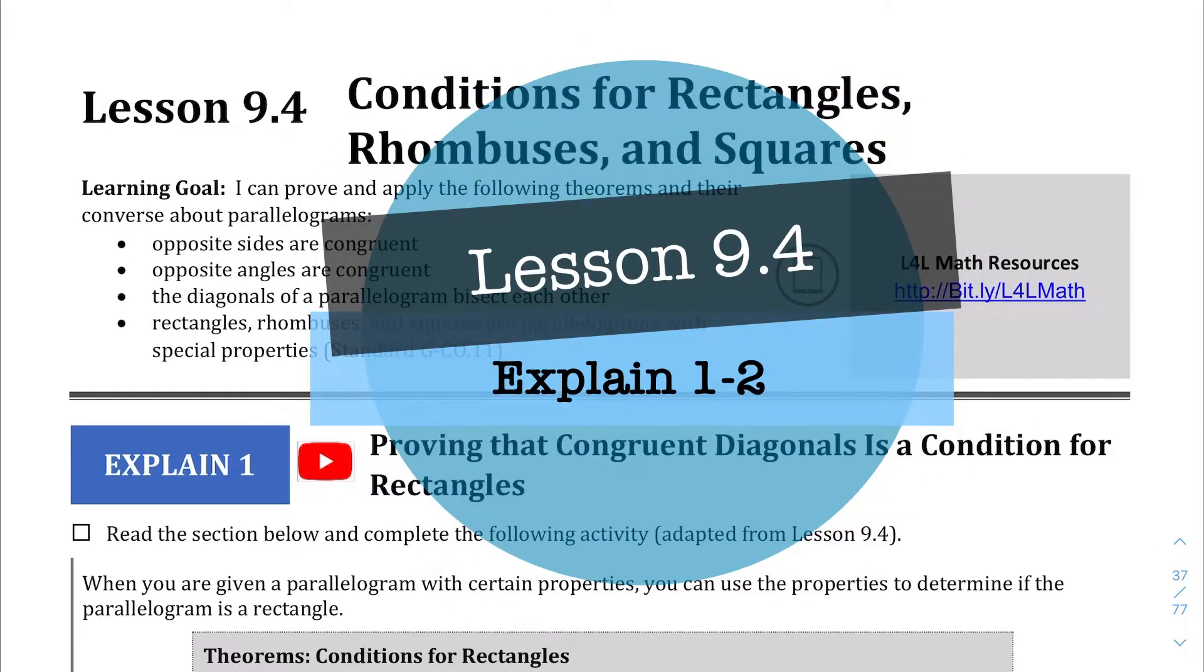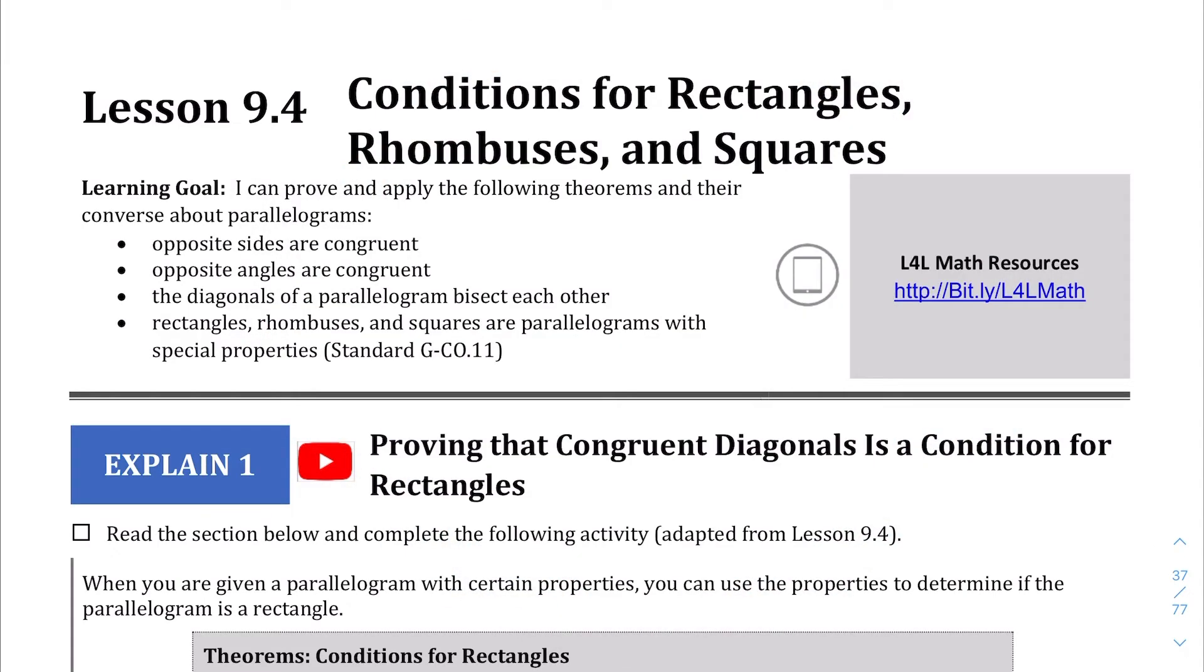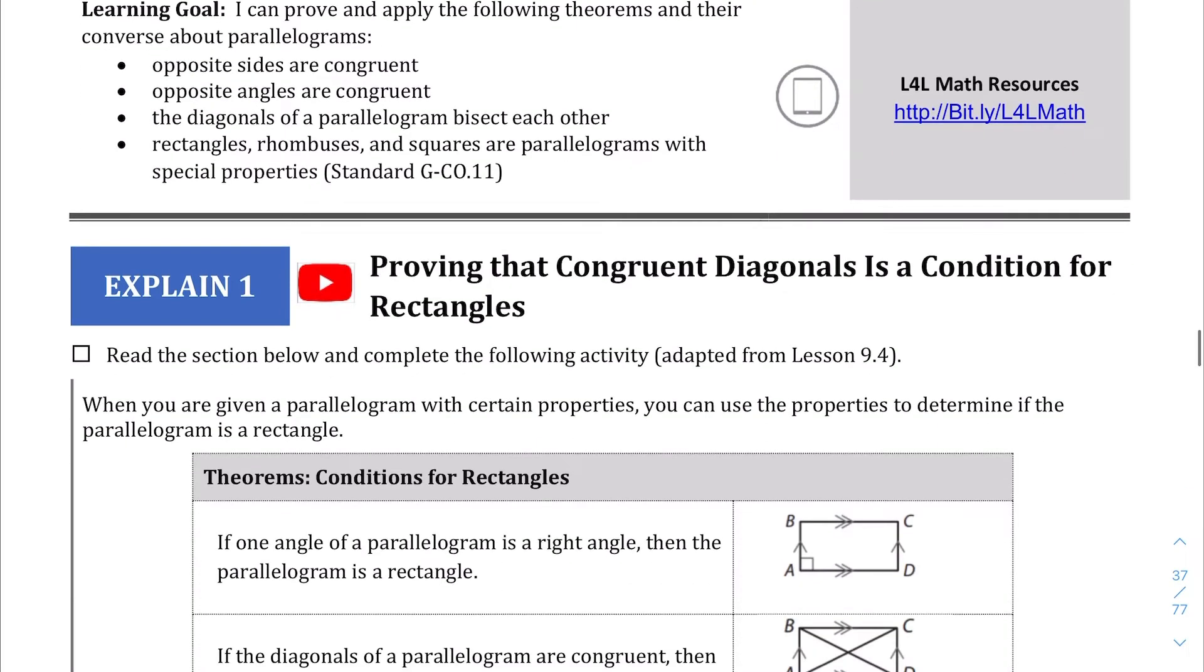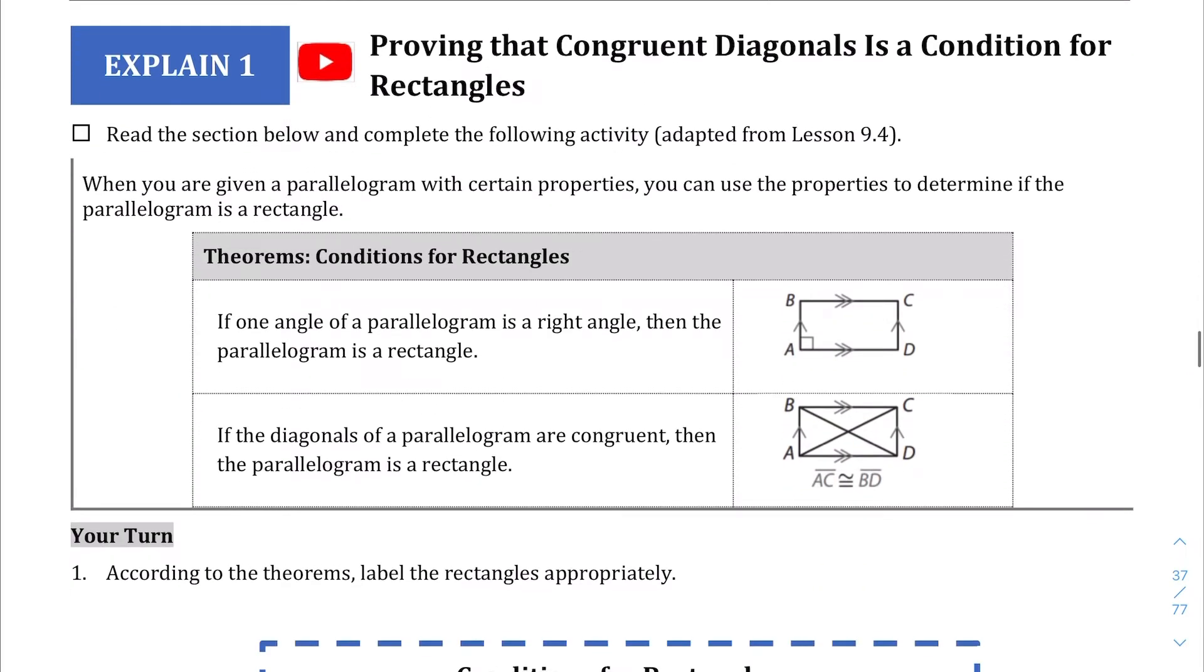Here we are at lesson 9.4. We're going to be talking about rectangles, rhombuses, and squares. So for the explain one section, here's two theorems talking about rectangles.